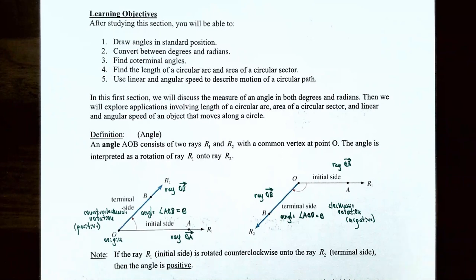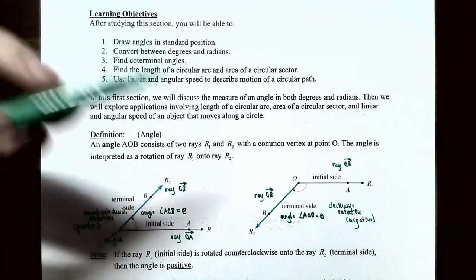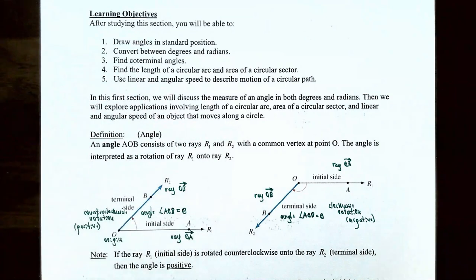The definition of an angle: an angle AOB consists of two different rays, R sub 1 and R sub 2, with a common vertex at point O — in other words both rays begin at the point O. The angle is interpreted as the rotation of ray R1 onto ray R2.